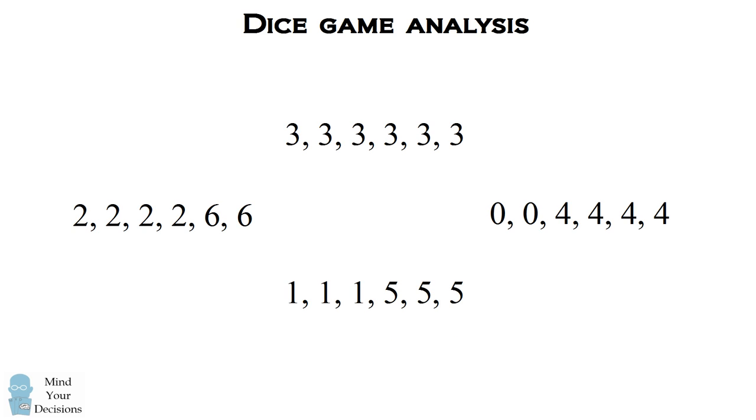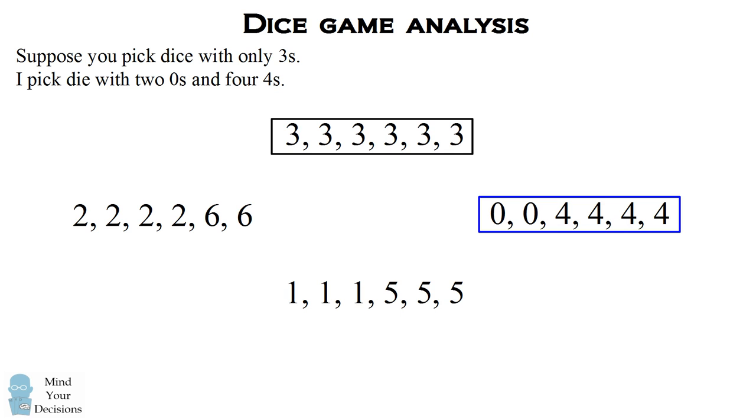So let's analyze this game. Suppose you pick the dice that has all threes. What I'm going to do is I'm going to pick the dice which has zero on two of its faces, and four on four of its faces. What's going to happen when we roll against each other? Well, if I roll a zero, which happens two out of the six times, I'm going to lose to you because you're always going to roll a three.